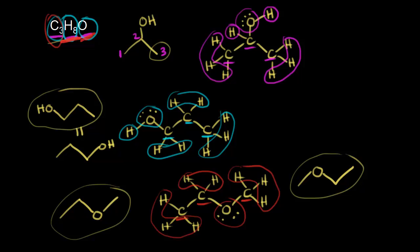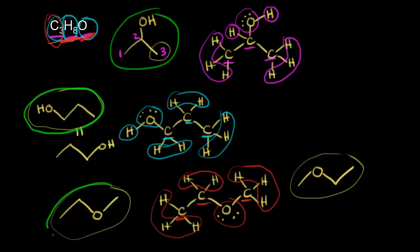So we have a total of three structural isomers with the molecular formula C3H8O. As you go further in organic chemistry, you'll learn that the first two isomers — the ones with an OH group — are called alcohols, and the last structural isomer is called an ether. We'll cover that more in other videos.